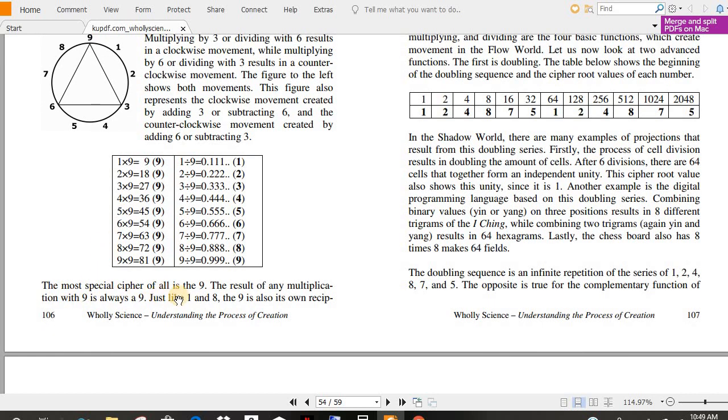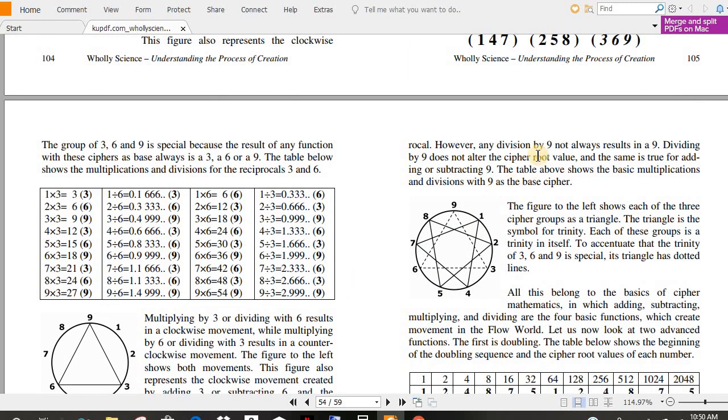The most special cipher of all is the nine. The result of any multiplication with nine is always a nine. Just like one and eight, the nine is also its own reciprocal. However, any division by nine not always results in a nine. Dividing by nine does not alter the cipher root value, and the same is true for adding or subtracting nine. The table above shows the basic multiplications and divisions with nine as the base cipher. The figure to the left shows each of the three cipher groups as a triangle. The triangle is the symbol for trinity. Each of these groups is a trinity in itself. To accentuate that the trinity of three, six, and nine is special, its triangle has dotted lines.